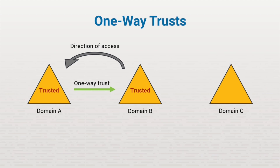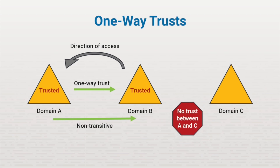However, domain B does not trust domain A, so domain A's users cannot access domain B's resources. Notice that in a one-way directional trust, the arrow of the trust path points to the domain that is trusted. The direction of access is from the trusted domain to the trusting domain's resources. If a trust is non-transitive, then the trust relationship between two domains is not extended to other domains. This can be helpful in a situation where you want to deny a trust relationship to protect resources.